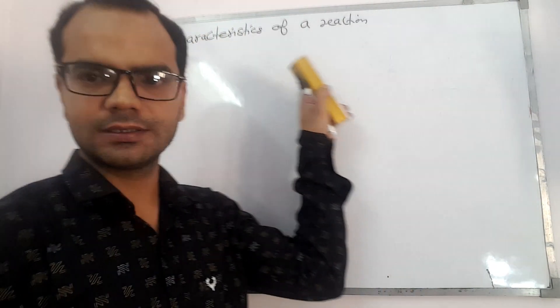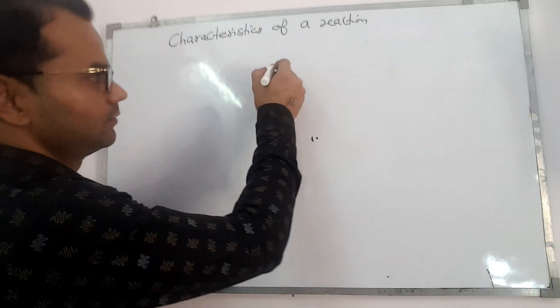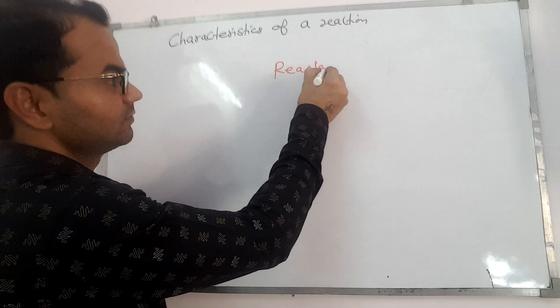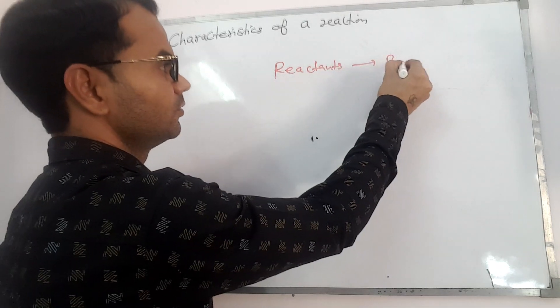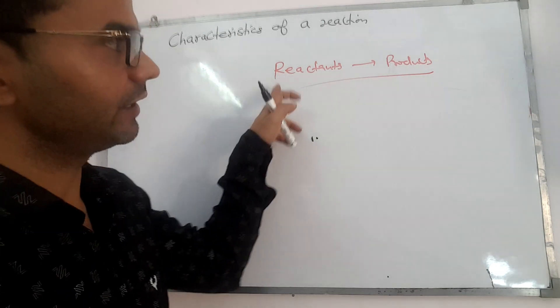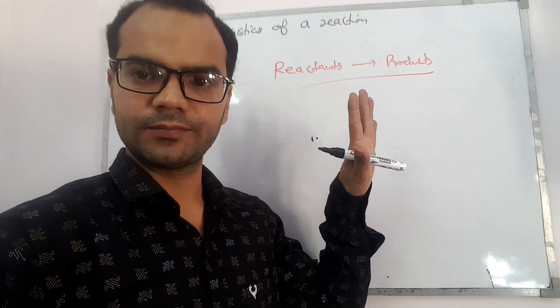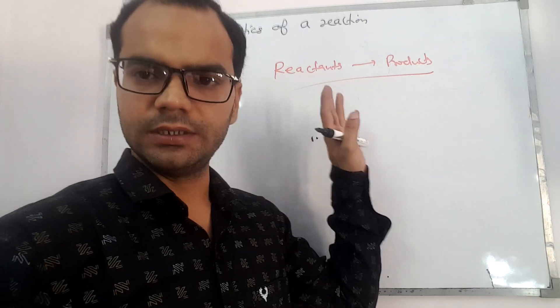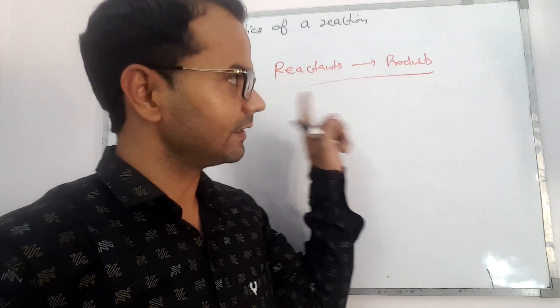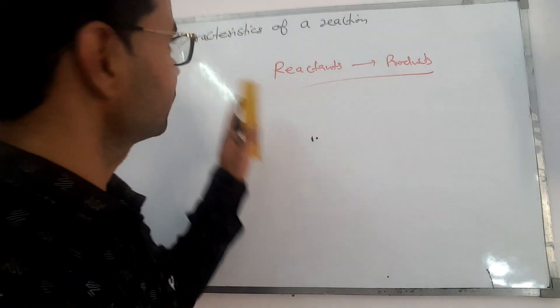Good morning and welcome back to my YouTube channel. Today we will understand the characteristics of a chemical reaction for class 10. When reactants are converted into products, the conversion of reactants into products is accompanied by five characteristics which can be noticed easily. We will understand each one by one with suitable examples.